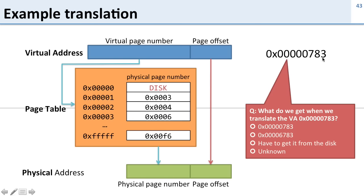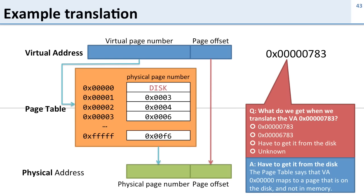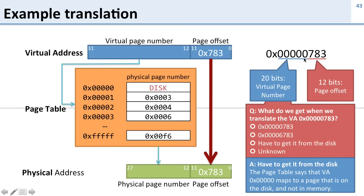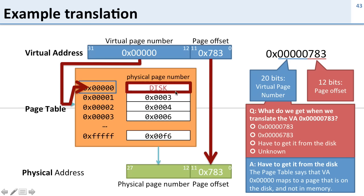Here's another virtual address — what do we get when we translate it? Well, here we're going to have to get it from disk. If we look at what the page table does, it takes the virtual page number, which is zero. When we look up virtual page number zero, it says it's on the disk. The page offset goes through unchanged, then we look at the virtual page number — all zeros — look that up in the page table, and the page table entry for this virtual page number says it's on disk. We can't get a physical address because this data is on disk; we have to go to disk and load it.